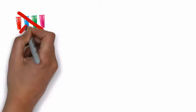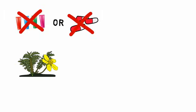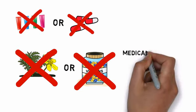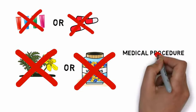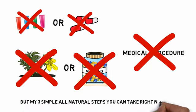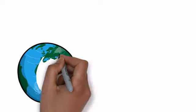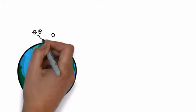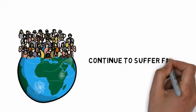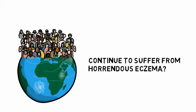No cream or medicine can stop eczema by itself. No herb or vitamin can stop eczema by itself. Not even expensive medical procedures. But my three simple, all-natural steps you can take right now can. This little-known piece of knowledge is the direct reason why millions of people around the world continue to suffer from horrendous eczema after trying nearly everything.